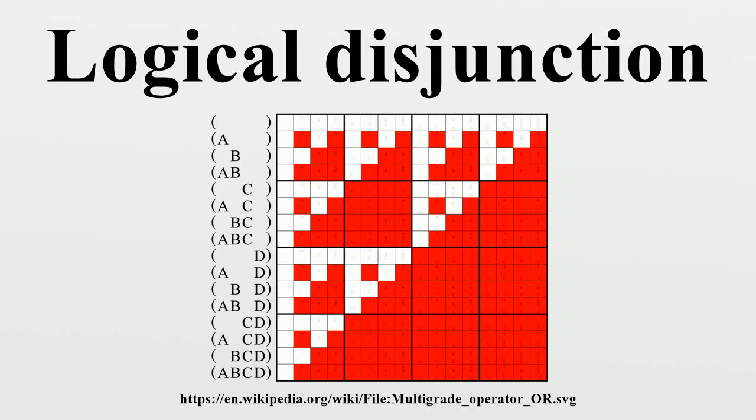In logic and mathematics, OR is the truth functional operator of disjunction, also known as alternation. The OR of a set of operands is true if and only if one or more of its operands is true.